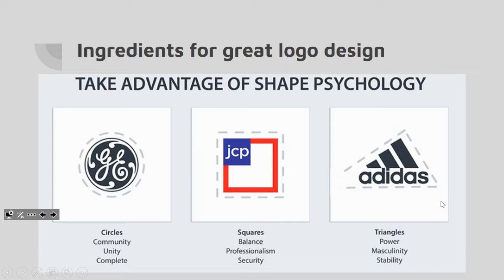Shapes can also be really important when it comes to logos. When you have such a simple design, you'll often need to think about the shapes included because shapes can represent things subconsciously. A shape can give us a first impression or an emotional response. Circles can represent community, unity, and completeness. Squares represent balance, professionalism, and security — JC Penney uses a square. Adidas uses a triangle shape, which can represent power, masculinity, and stability.